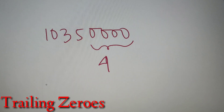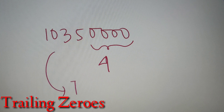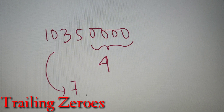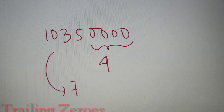Now, what if I tell you to find the number of trailing zeros of this number when it is converted to base 7? There are many methods to convert a number from one base to another, but converting with the usual method and then finding the trailing zeros is very tedious. So let's discuss a basic formula to find the number of trailing zeros of any given number in any given base.